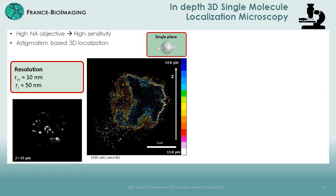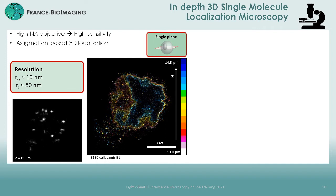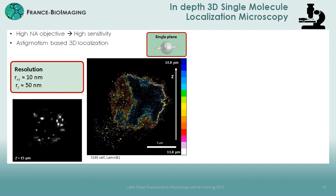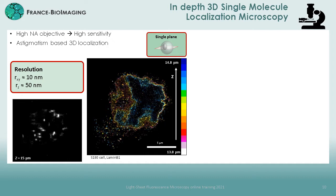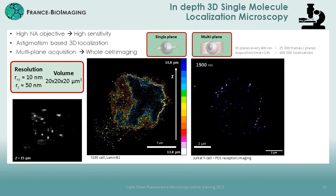I would like to highlight two specific imaging capabilities of the SOSPIN technology which are really its strengths. First, its high sensitivity and intrinsic optical sectioning allow performing single-molecule localization microscopy in-depth, tens of microns above the coverslip. In combination with an astigmatism-based 3D localization, we demonstrated the ability to achieve resolutions down to 10 nanometers radially and 15 nanometers axially, 15 micrometers above the coverslip, as we can see in this movie of single molecules and in these color-coded 3D reconstructions.